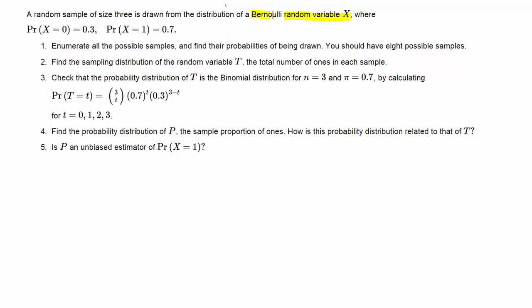Here we start off with a random variable X, which is a Bernoulli random variable. That means it can take values 0 and 1, and it takes the value 1 with probability 0.7. We call that sometimes the success probability pi.